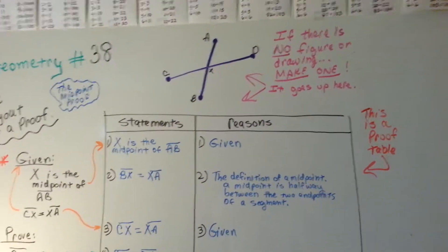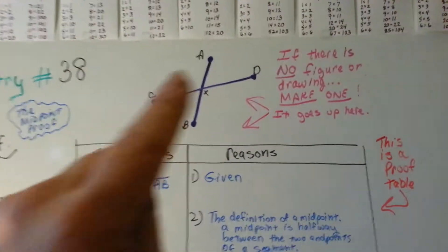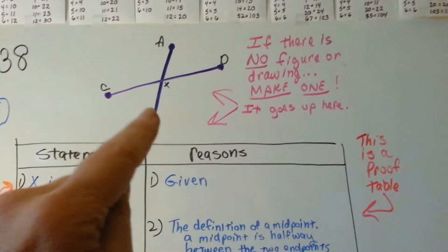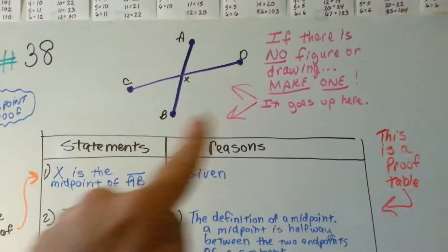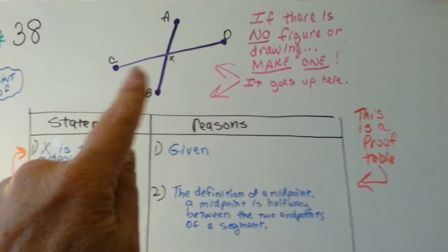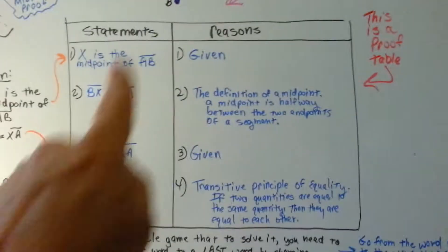So, we're going to look at this. If there's no drawing, no figure, you make one and it goes up above the table. See? This is the proof table, right here.